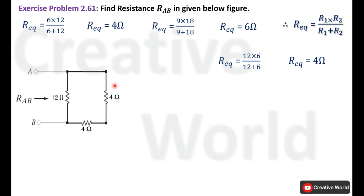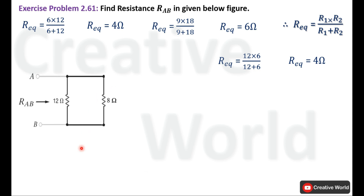Now two resistances are in series. Adding them together gives an equivalent resistance of 8 ohm.